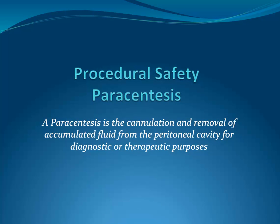Now let's talk about paracentesis. This procedure, not unlike thoracentesis, is the cannulation and removal of accumulated fluid for diagnostic and/or therapeutic purposes — in this case accessing the peritoneal cavity rather than the pleural space. This procedure is generally tolerated well, but still carries the risk of infection, excessive bleeding, and perforation of the bowel. The most common causes of ascites include cirrhosis, severe liver disease, and metastatic cancer. Other causes include peritonitis and conditions that interfere with venous return, such as heart failure or valvular disease.